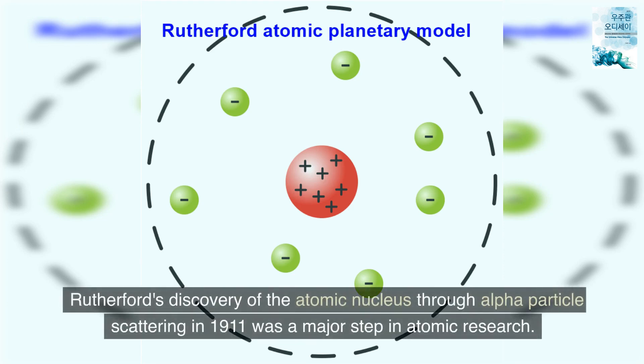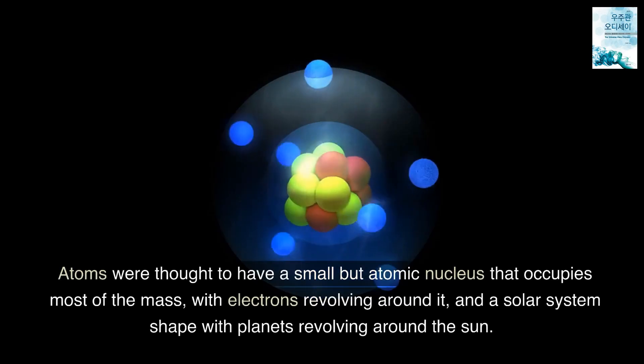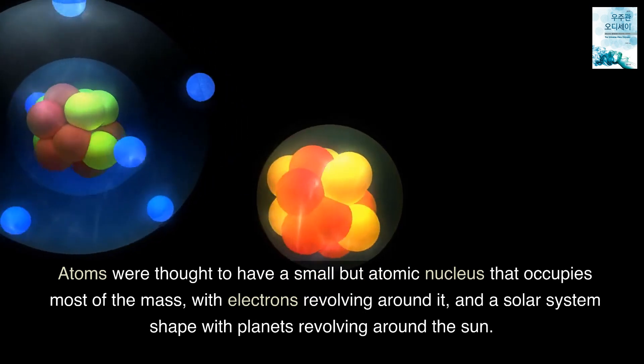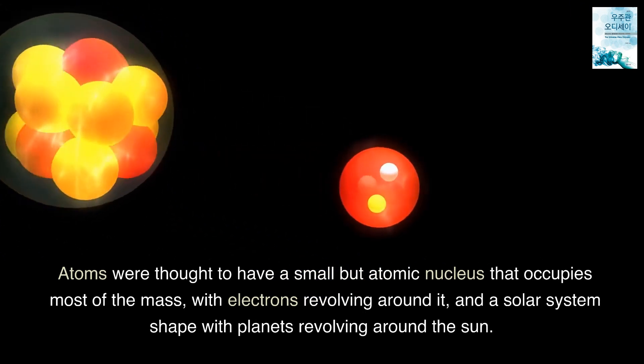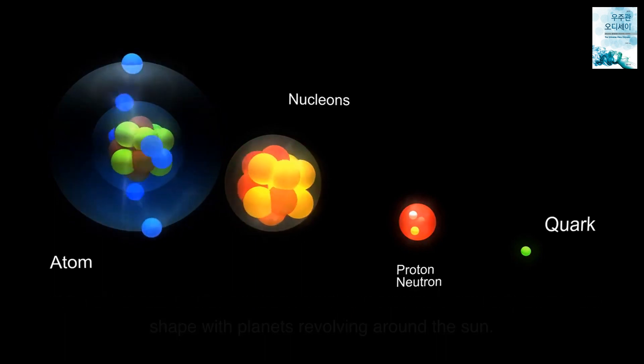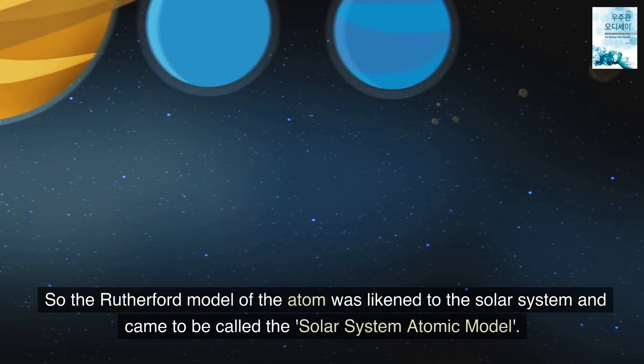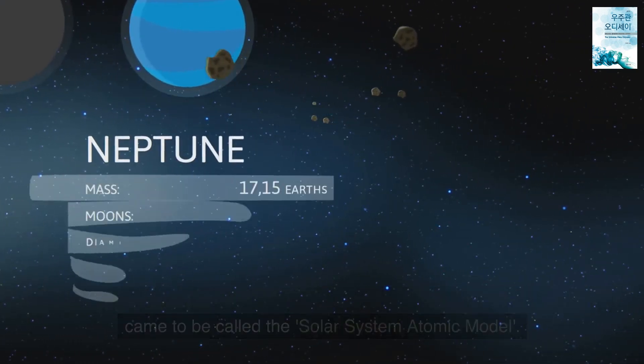Rutherford's discovery of the atomic nucleus through alpha particle scattering in 1911 was a major step in atomic research. Atoms were thought to have a small atomic nucleus that occupies most of the mass, with electrons revolving around it, in a solar system shape with planets revolving around the sun. So the Rutherford model of the atom was likened to the solar system and came to be called the solar system atomic model.